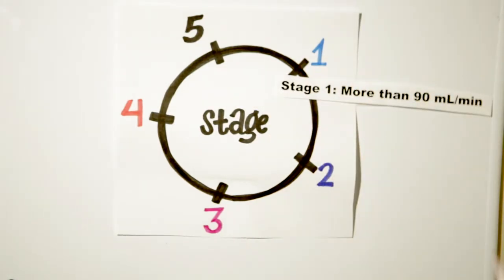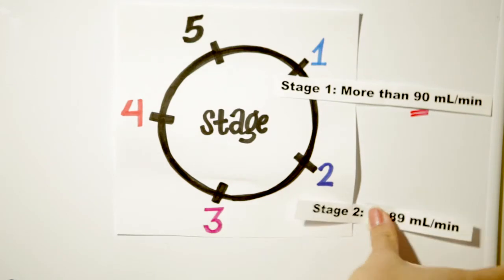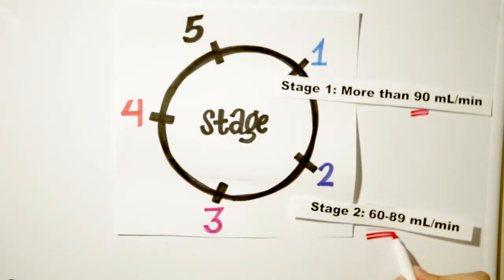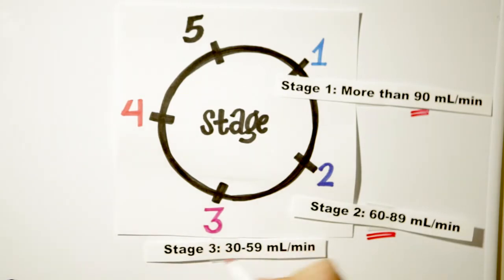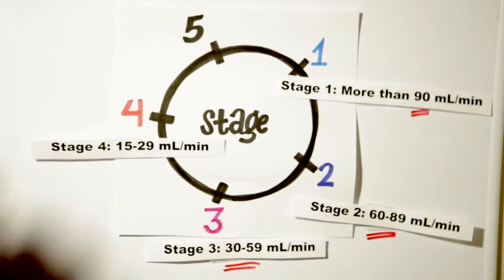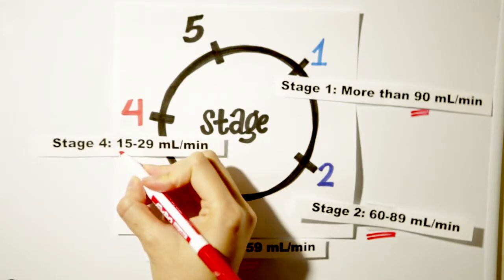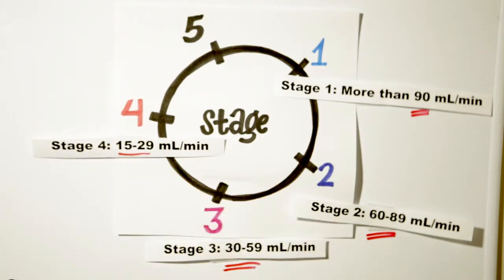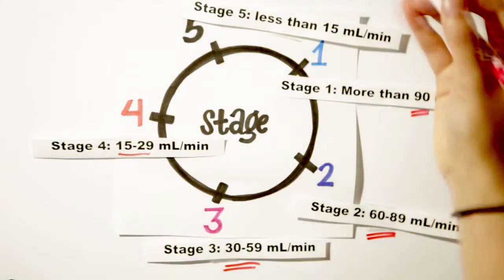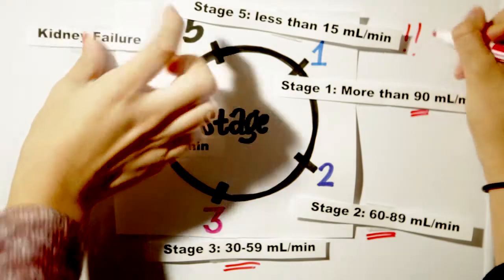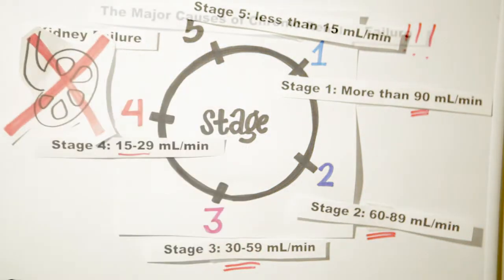Stage 1 is when the GFR is greater than 90 mL per minute. Stage 2 is when the GFR is between 60 and 89 mL per minute. Stage 3 is when the GFR is about 30 to 59 mL per minute. Stage 4 shows a severe reduction in kidney function with a GFR between 15 and 29 mL per minute. And Stage 5 is kidney failure with a GFR of less than 15 mL per minute.